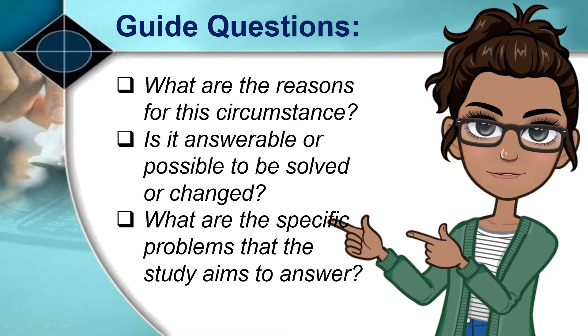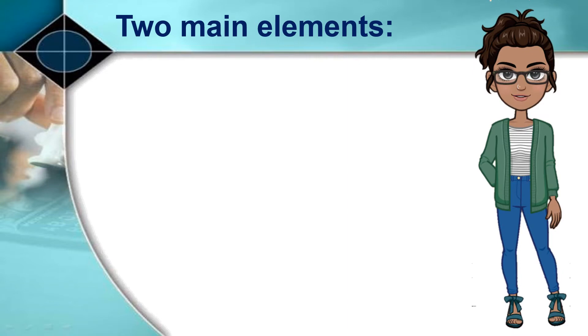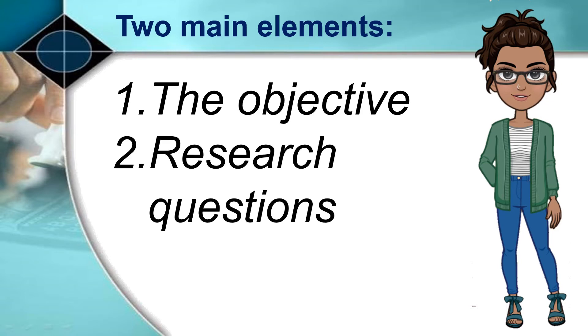The statement of the problem tells what is done to make the situation that exists more like what it should be. It exposes anything that is wrong with the situation or condition or circumstance which is being described. It has two main elements: the objective and the research questions.